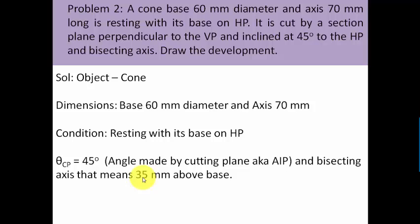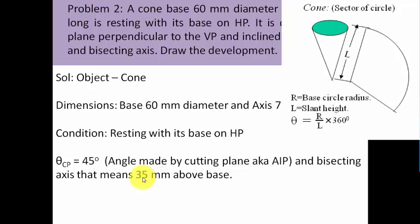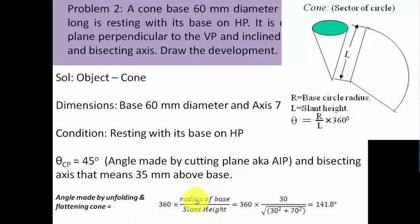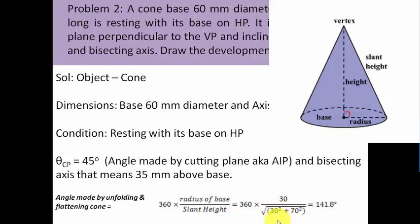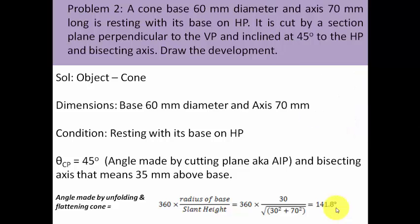When you unfold a cone and lay it flat, it appears as a sector of a circle subtending an angle at the apex calculated by: 360 × (radius of base / slant height). The radius of the base is 30 mm (half of 60), and using the Pythagoras theorem with axis 70 mm, the slant height gives an angle of 141.8 degrees.